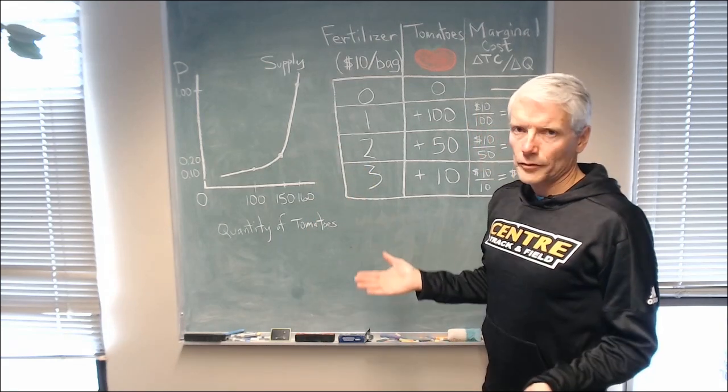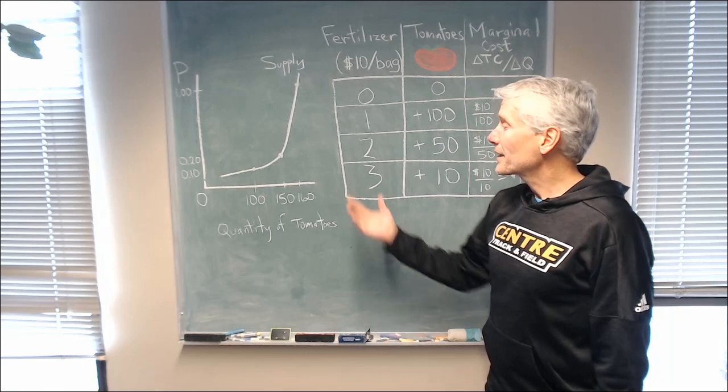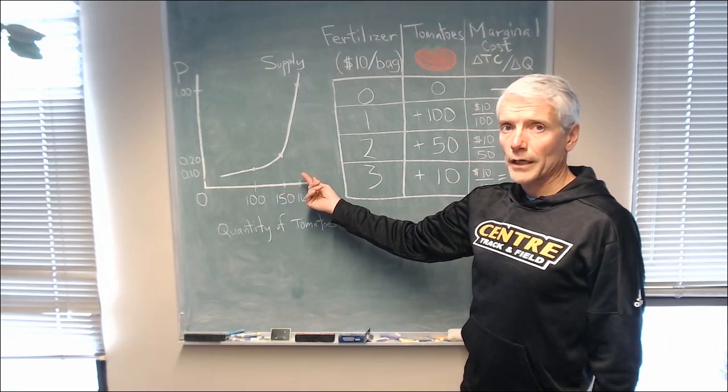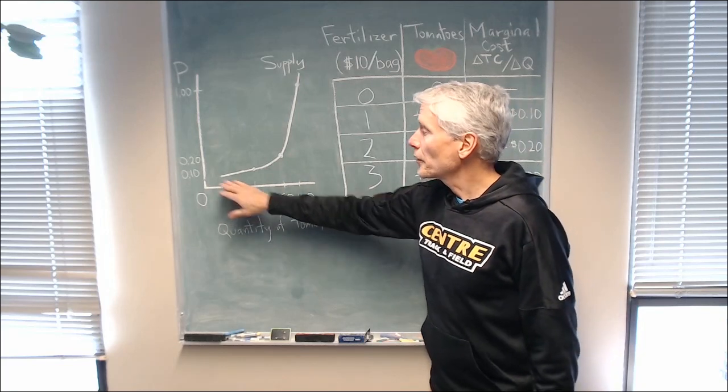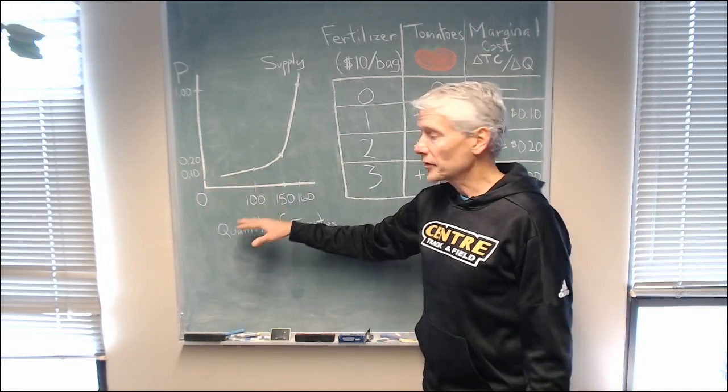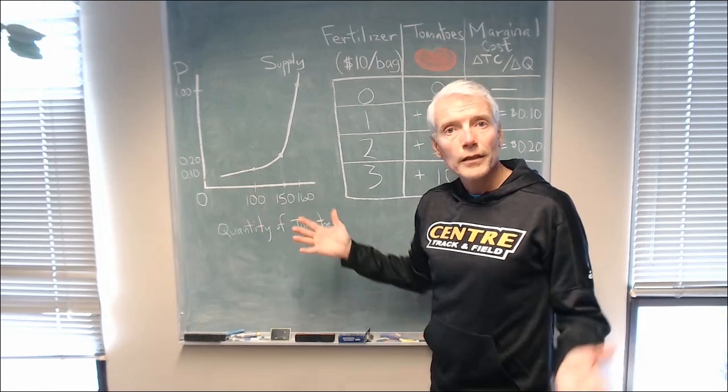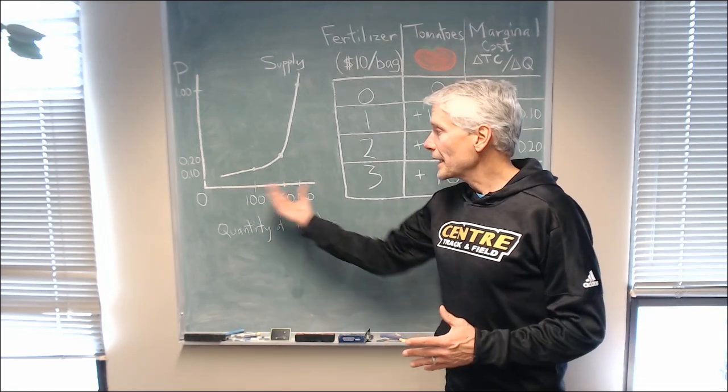Well, it's not just because the firm needs more money for supplying more, because the firm would get more money for supplying more even if the price stayed the same. If they supplied 100 for 10 cents, they'd get $10. If they supplied 150 for 10 cents each, they would get $15. So they're getting more.